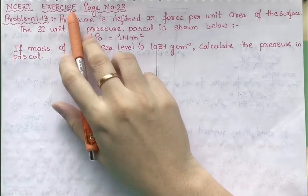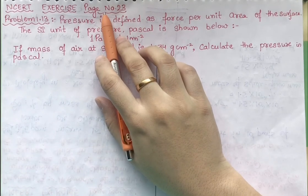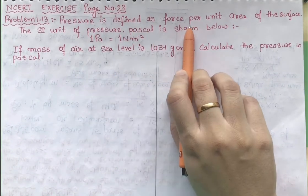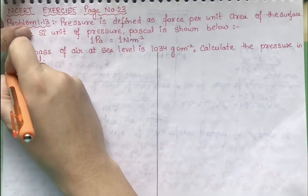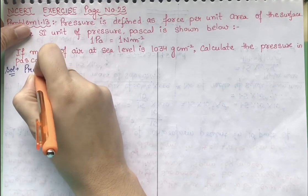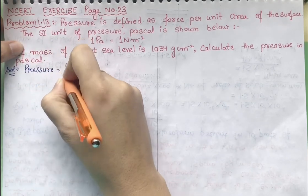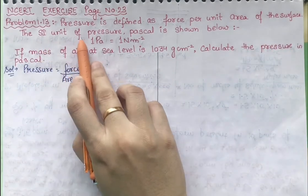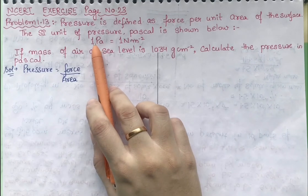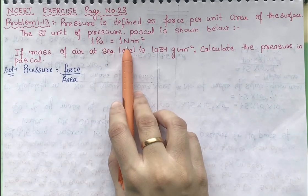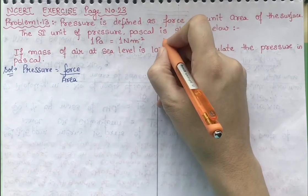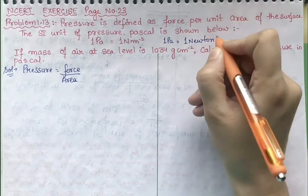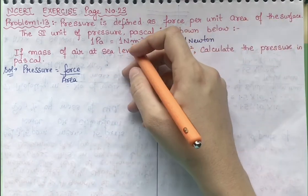Hello students, NCERT exercise page number 23, problem number 1.39. Pressure is defined as force per unit area. Pressure equals force by area. The SI unit of pressure is Pascal, and 1 Pascal equals 1 Newton per meter square. Since force is defined in Newton, we use Newton per meter square as the unit.